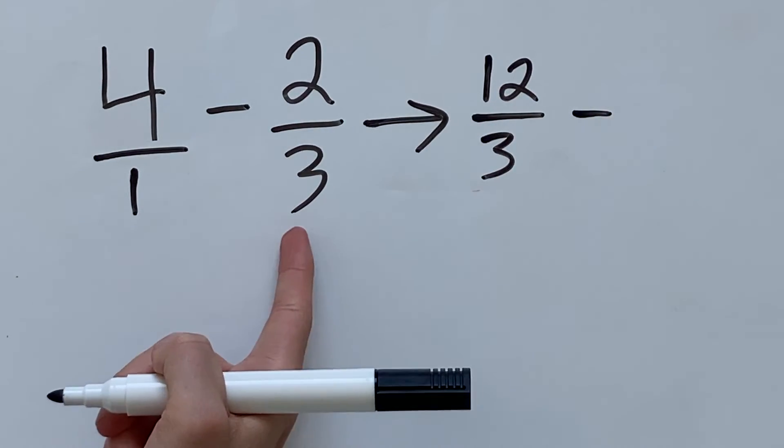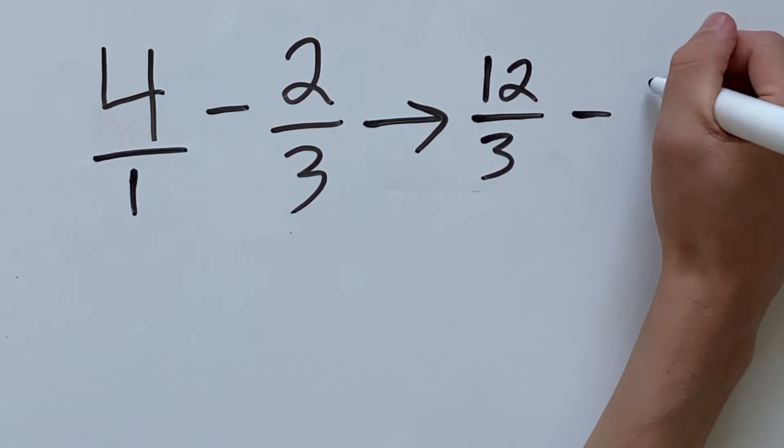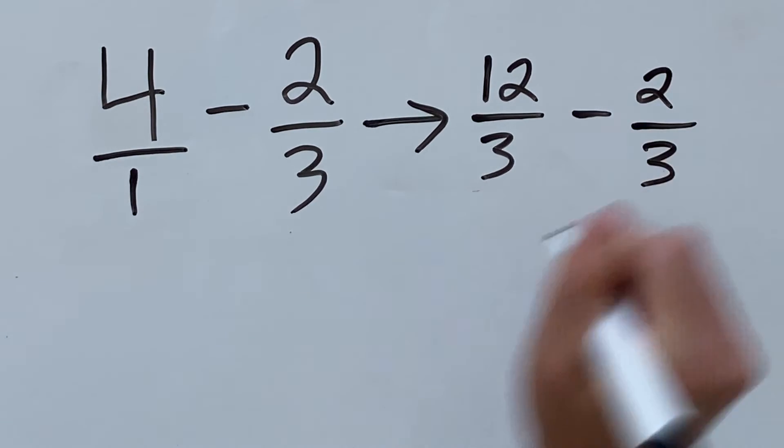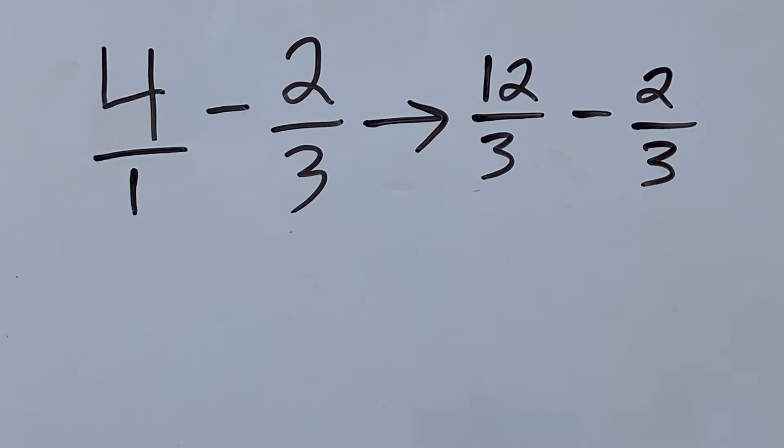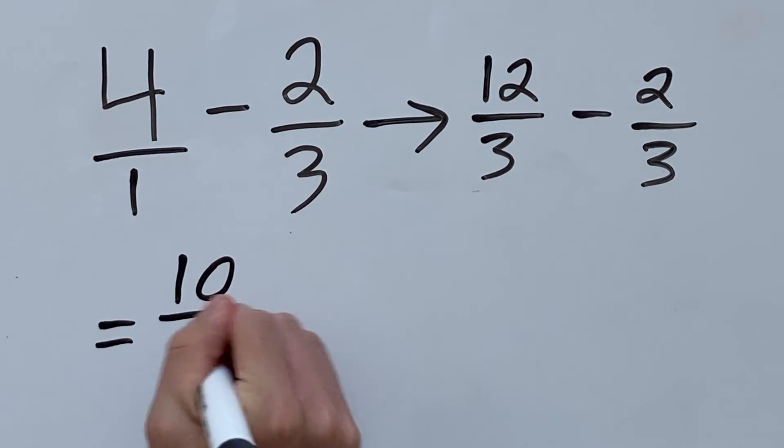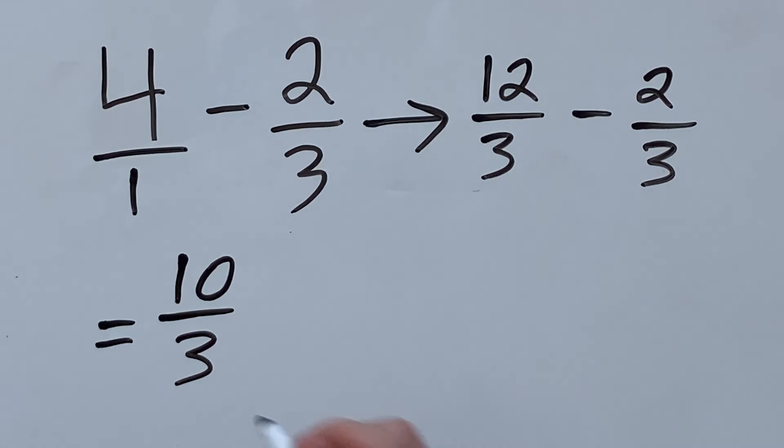And our second fraction will stay the same, so that will still be 2 over 3. Now we have a fraction problem with one fraction subtracted by another with both having a common denominator. That means we can just subtract 2 thirds from 12 over 3. So, 12 over 3 minus 2 thirds is 10 over 3 because 12 minus 2 is 10 and the denominator will stay the same.